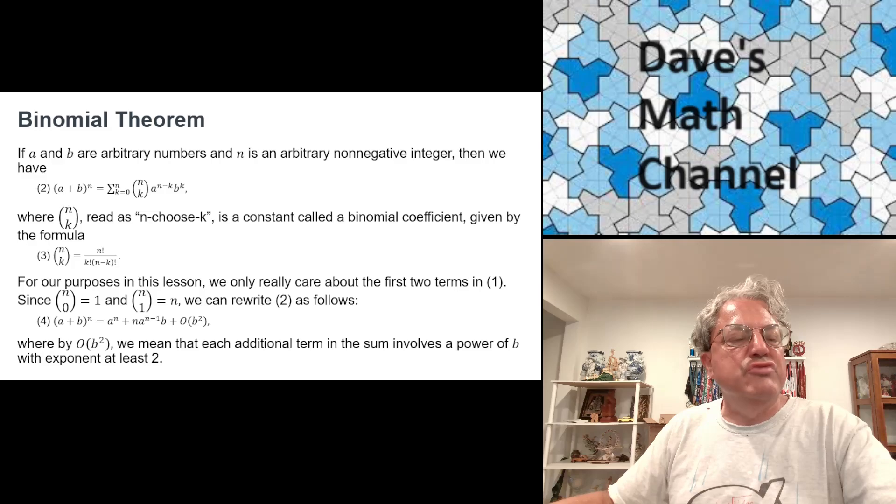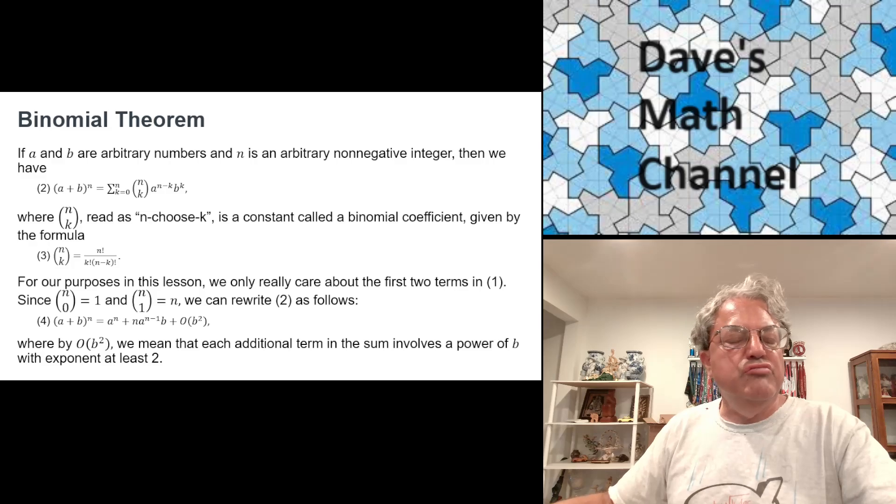I'm not going to derive this formula. There's a formula for the binomial coefficients, which I wrote down in equation 3. You can write it in terms of factorials. n choose k is just n factorial divided by the quantity k factorial times n minus k quantity factorial. We really don't care about most of these coefficients for what we're doing today. We only care about the first two. It's enough to note that n choose 0 is 1, that's pretty easy to see. And also n choose 1 is n. That's all we really need.